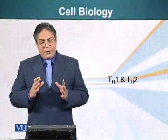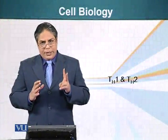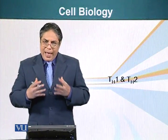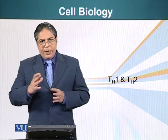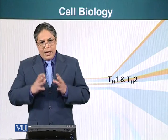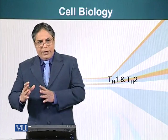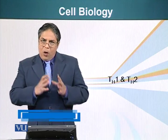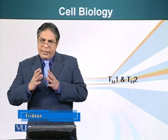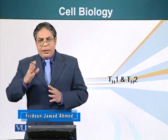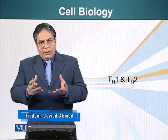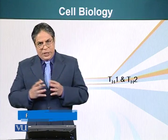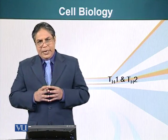We just said that helper T cells require two signals from antigen presenting cells in order to become activated. Helper T cells can become two different types of T cells: either helper T cell type 1 or helper T cell type 2. This all depends upon the type of pathogen that was ingested by the antigen presenting cell.